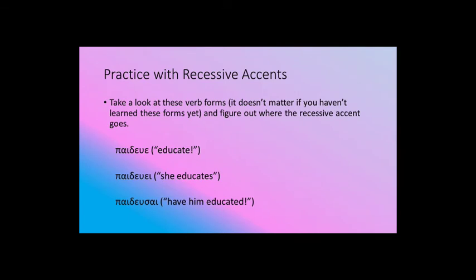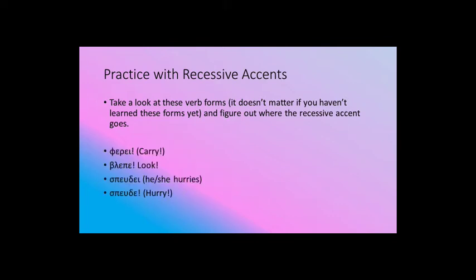Let's do a little bit of quick practice with recessive accents. Below are three forms — even though we haven't learned all of these different forms, they come from a normal non-contract verb. Go ahead and put the accents where they belong on these forms. There are a few more practice questions and a couple of other questions about accents. Go ahead and answer those as best you can, and then we'll keep moving.